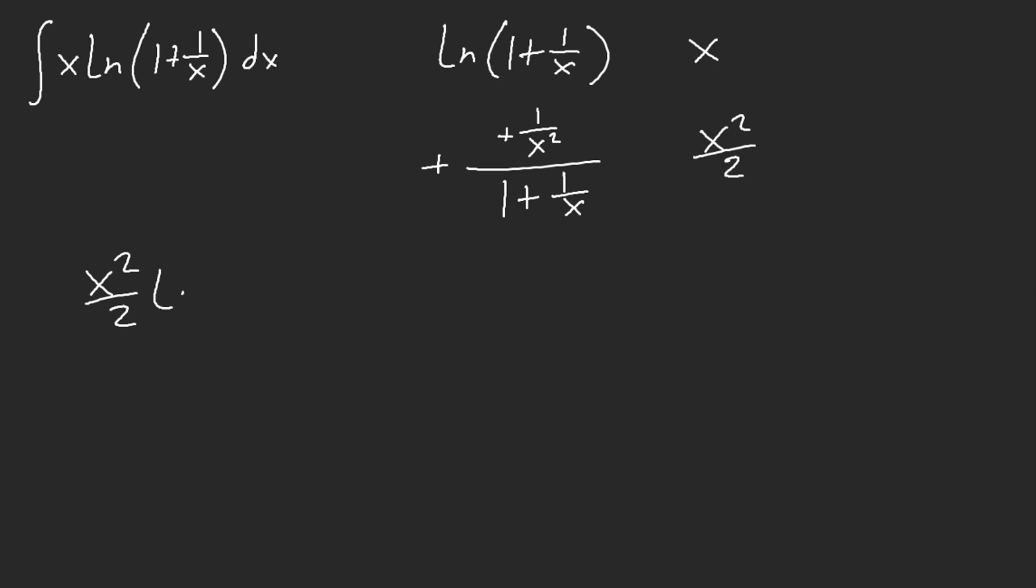because our answer is x squared over 2, ln of 1 plus 1 over x, minus, well, this is plus now, we have a half of dx over 1 plus 1 over x, which is easy.